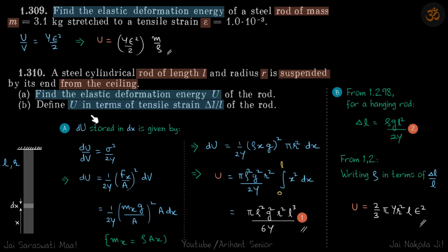Second part: U in terms of tensile strain. Here we got U in terms of rho, r, L, and Y. Let's try to get U in terms of tensile strain. For that we need to know what is the strain of the hanging rod, and that we derived in 1.298, so I'm not doing it again. For a hanging rod, delta L comes to be rho g L squared by 2Y. You can eliminate any one term from these two equations, so if you write rho in terms of the rest of the things and put it here, you will get U is equal to 2 by 3 pi Y r squared L into strain squared.